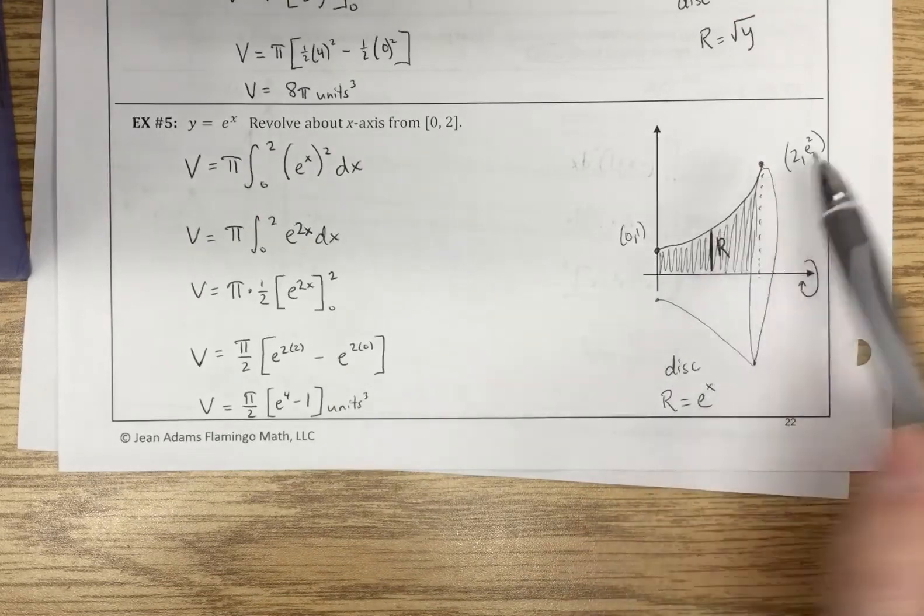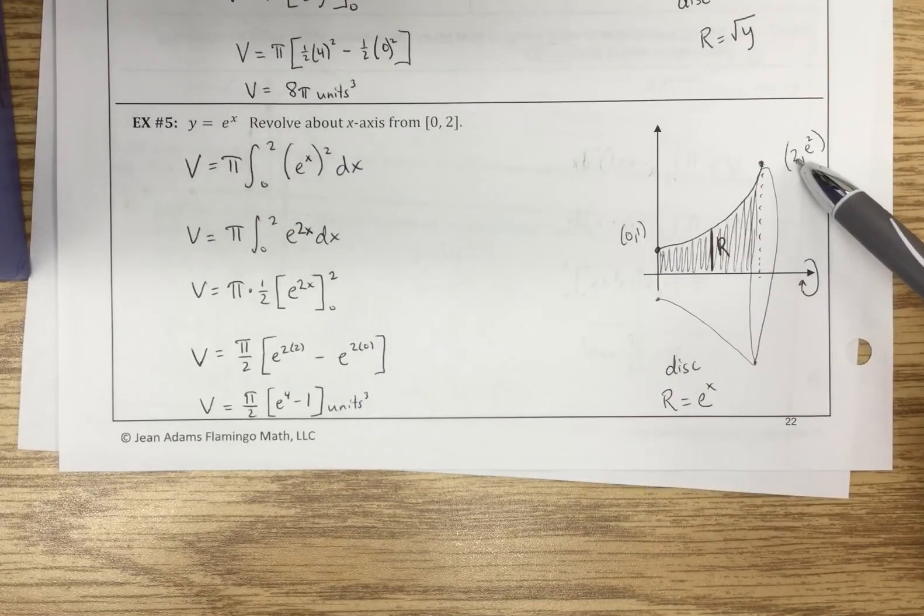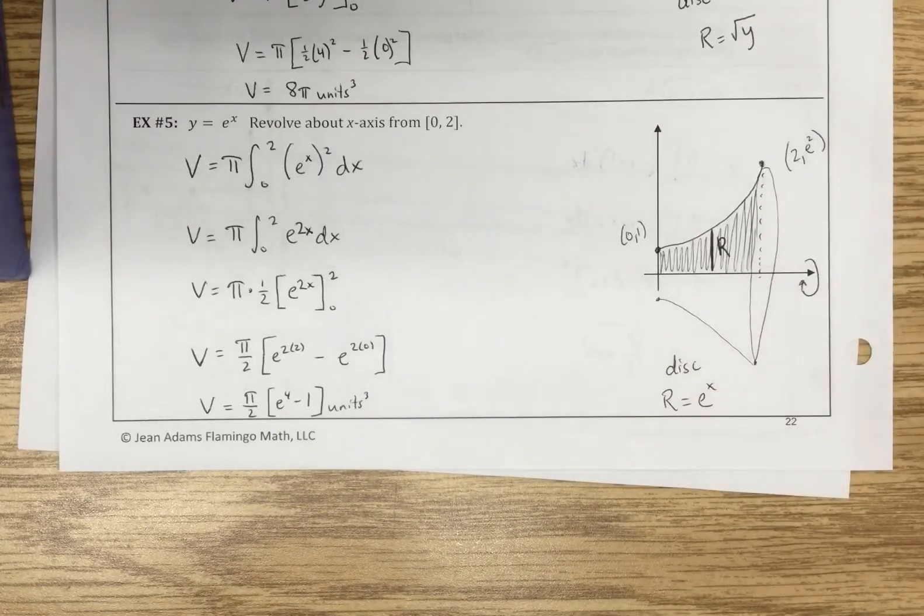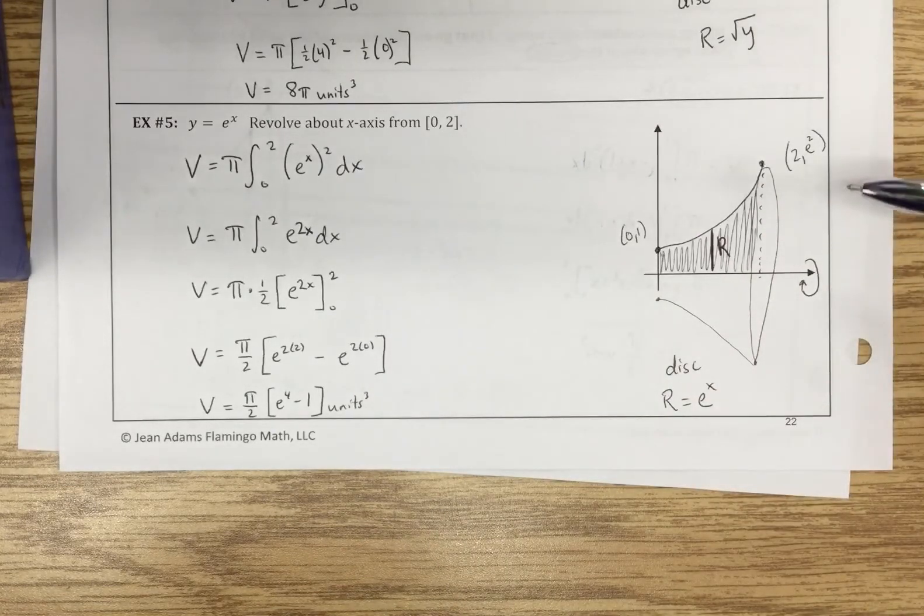And then as we come up here, if I were to plug in 2 because that's one of the bounds here, just know that it's e squared and it doesn't really matter what that number is as a decimal.